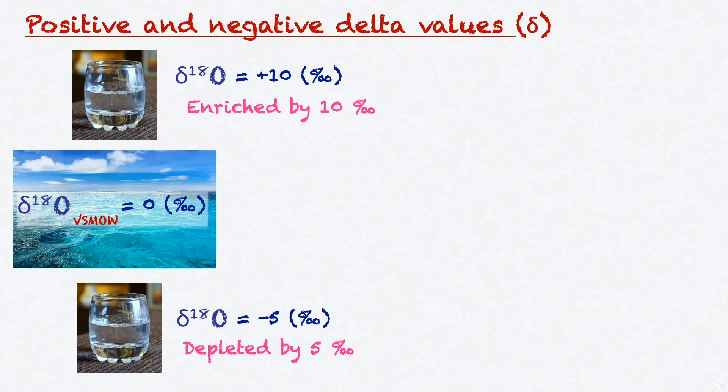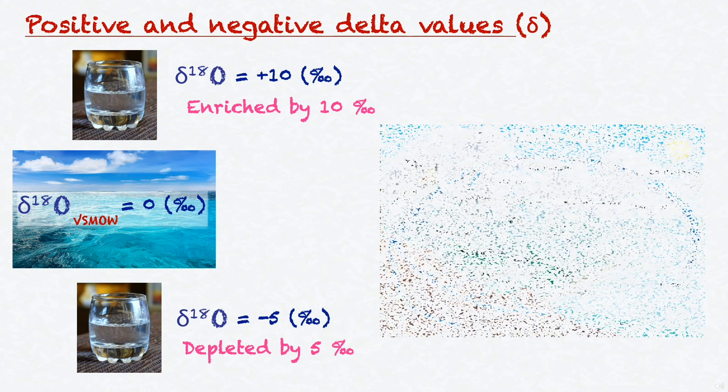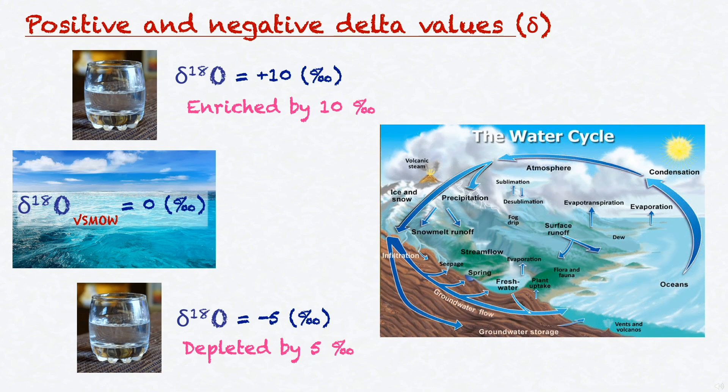Having one sample that is 10 per mil enriched, whereas another is 5 per mil depleted with respect to VSMOW, which is the standard value for mean ocean water, can tell us a lot about possible past pathways of our sample and the fractionation processes involved. Some of these processes are evaporation and precipitation, for example.